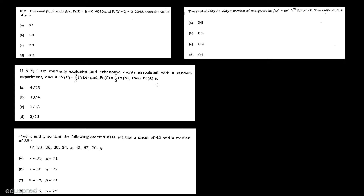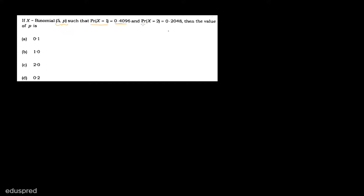In this video, I'm going to solve these four questions. Let's get started with the first one. If x follows a binomial distribution such that the probability that x equals 1 is given, and the probability that x equals 2 is given, then we have to figure out the value of p.